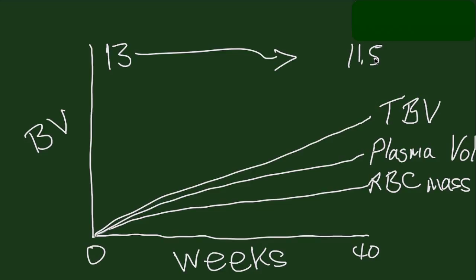And it peaks at about 40% above pre-pregnancy levels. Now, the red cell mass increases less than the plasma volume.